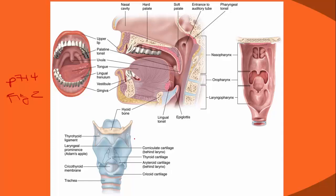The hyoid bone is one of the few bones in the body not connected to another bone — it's free-floating. Its role is to anchor the tongue and the cartilage of the epiglottis together. This is important because one of our airway tools manipulates the tongue, which indirectly manipulates the epiglottis through the hyoid bone.